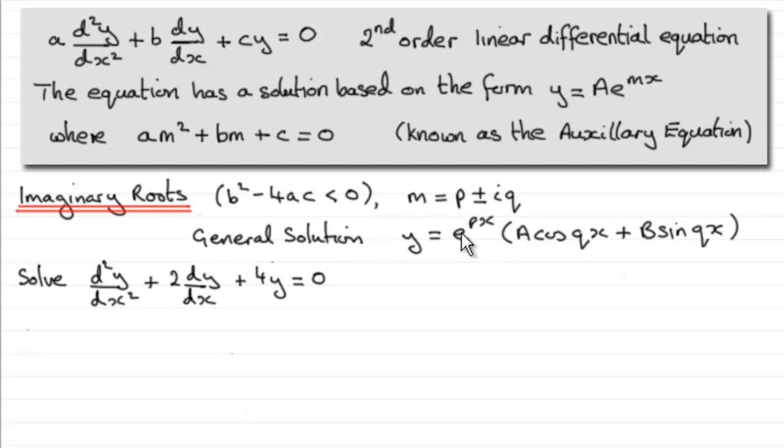And that led to the general solution of the form y equals e to the power px, all multiplied by a cos qx plus b sine qx.